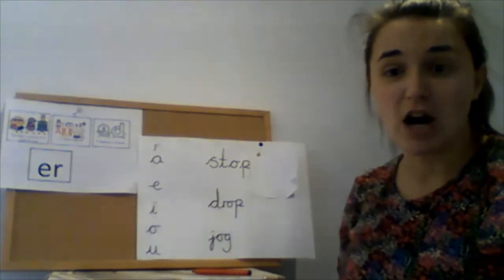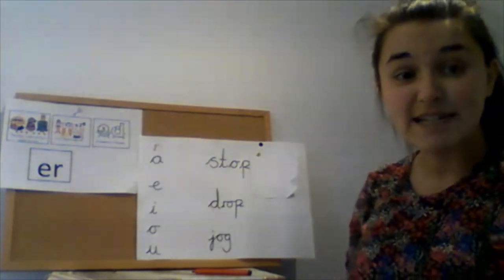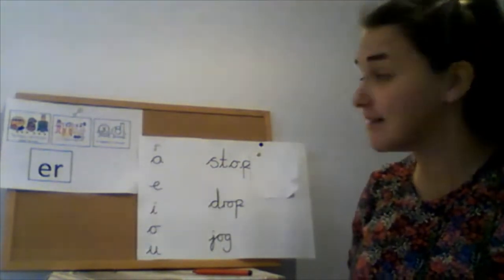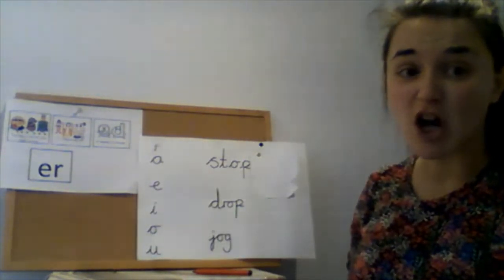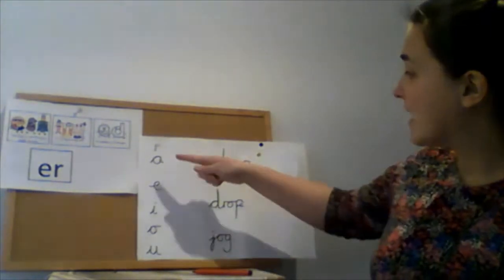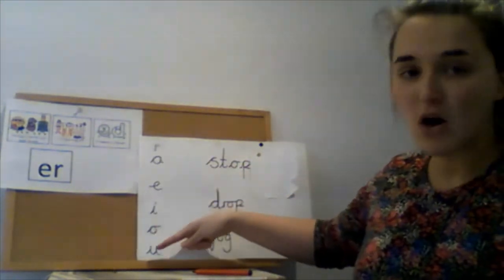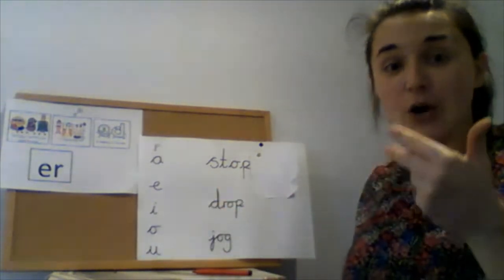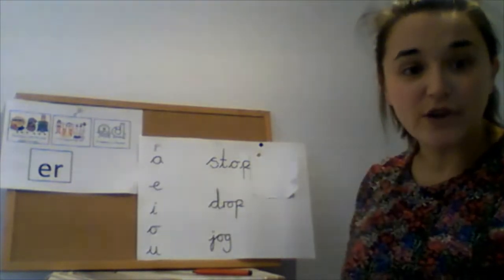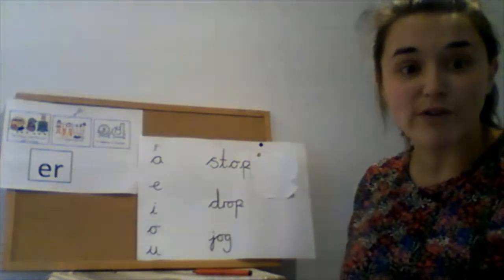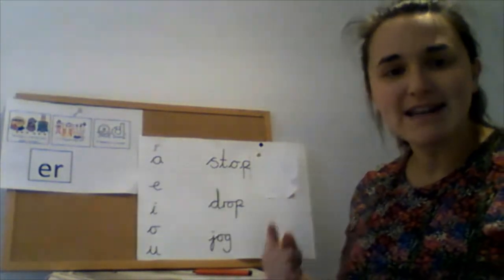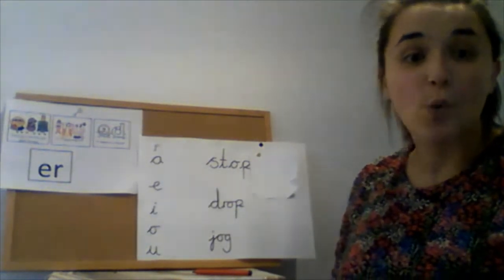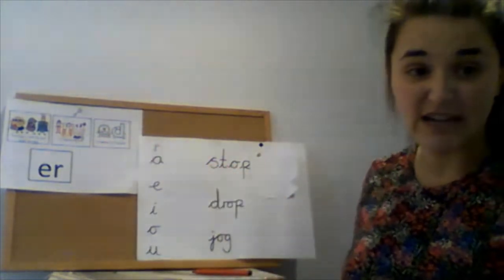We're going to carry on looking at our suffixes now, but instead of dropping the e, we're going to have to do something else in today's lesson. And that involves our short vowels: a, e, i, o, u. And remember the long sounds are a, e, i, o, u. When we have one of those short vowel sounds right next to the last letter in the word we're writing, we can't just add our suffix straight away.